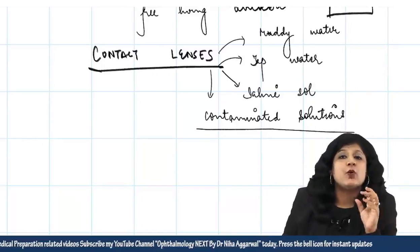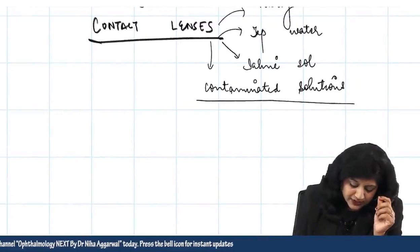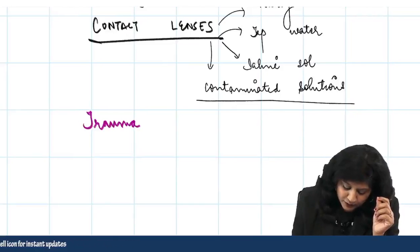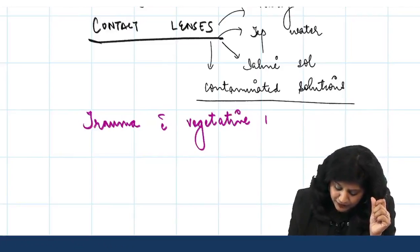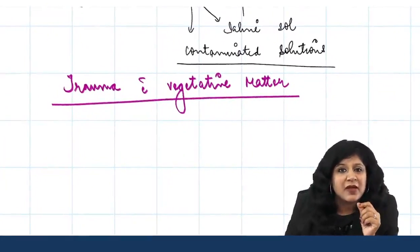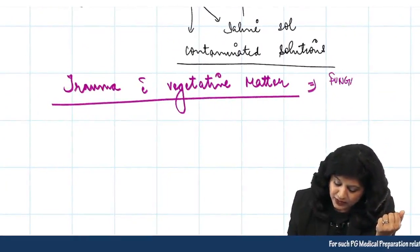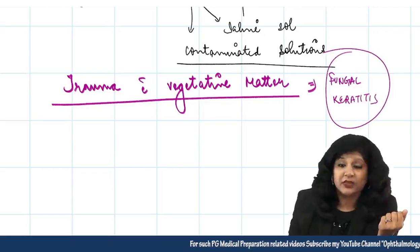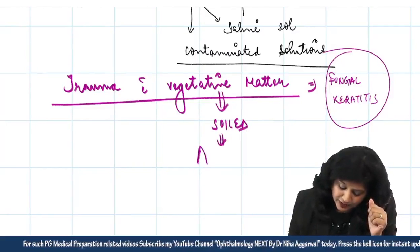Acanthamoeba keratitis can also occur following trauma with vegetative matter. Normally, trauma with vegetative matter makes us think of fungal keratitis, but if the vegetative matter is soiled, you can also think of Acanthamoeba. So Acanthamoeba can enter the eye both via contact lenses and via trauma with soiled vegetative matter.